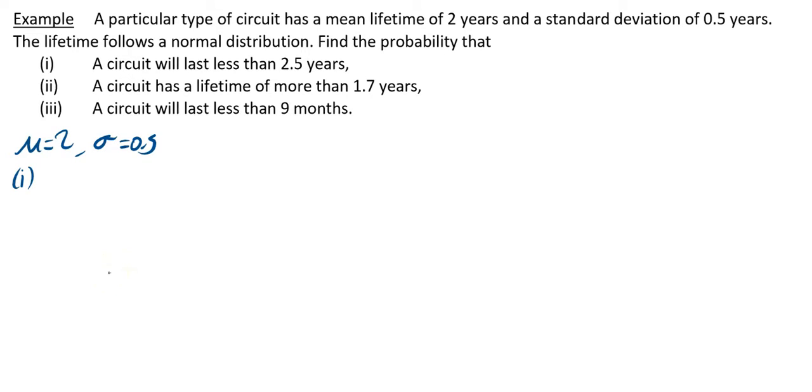Part 1 says find the probability that a circuit will last less than 2.5 years. So we're looking for the probability that X, the real-life value, lasts less than 2.5 years. To do this, first thing you want to do is convert.